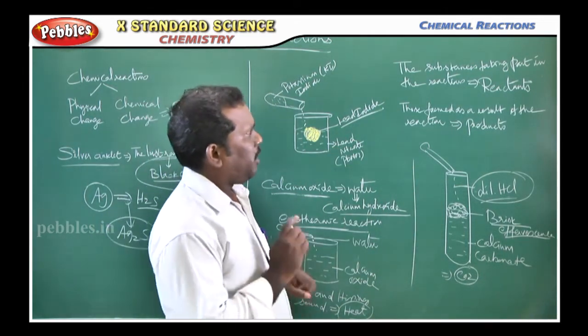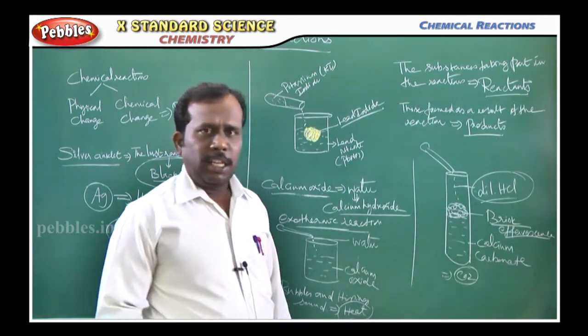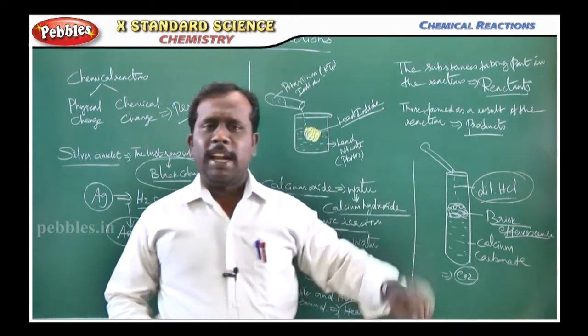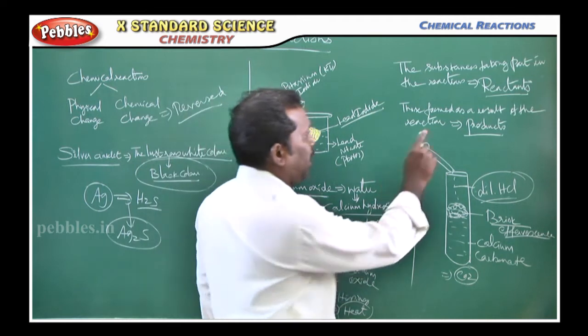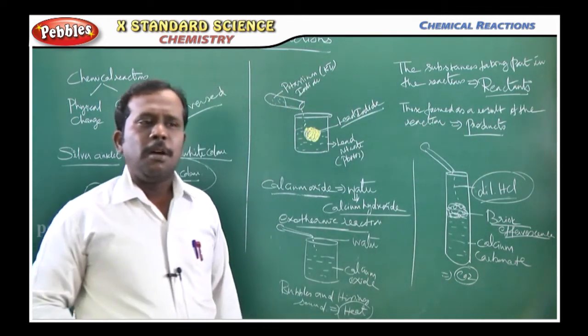In chemical reaction, what are they? The reactants and the products are formed. See, the substances taking part in the reaction are called reactants, and those formed as a result in the reaction are called products.